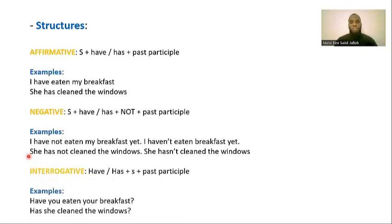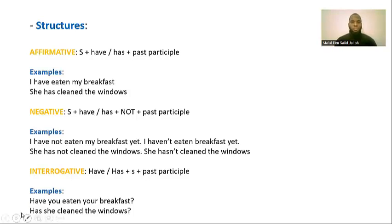Now let's talk about the interrogative form. In the interrogative, you start with the auxiliary 'have' or 'has,' then the subject, then the past participle of the main verb. For example: 'Have you eaten your breakfast?' The second sentence: 'Has she cleaned the windows?' This is how we give interrogative sentences in the present perfect.